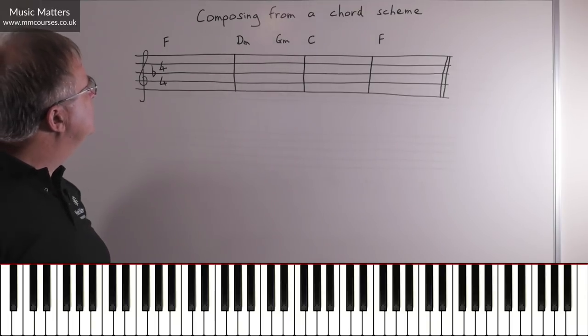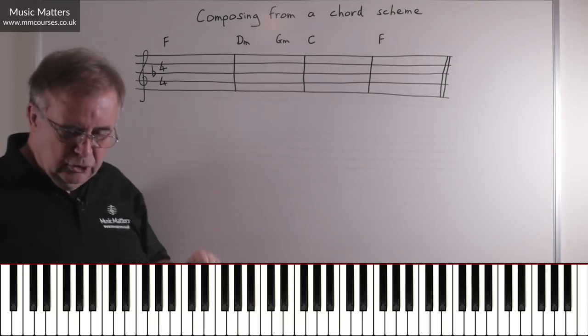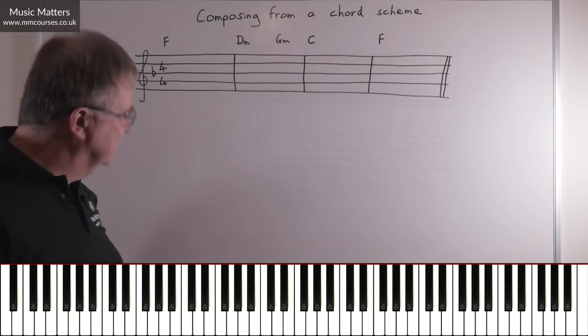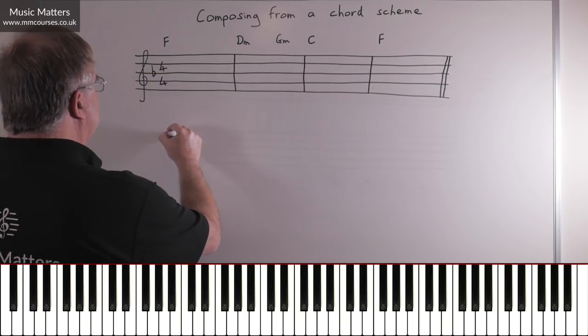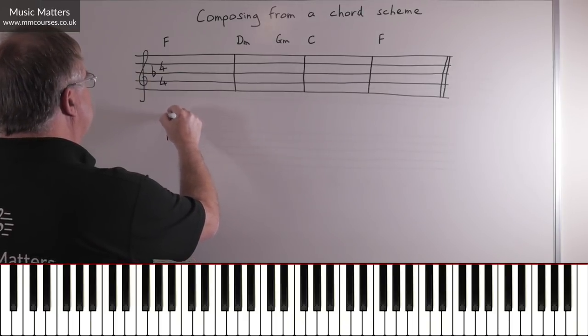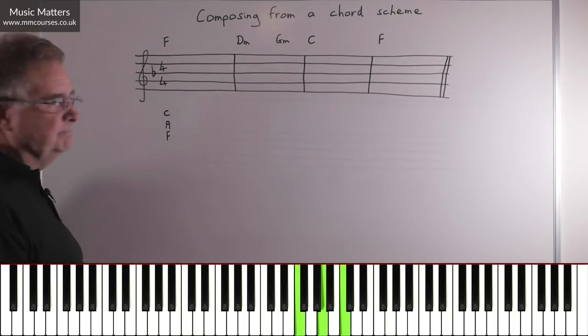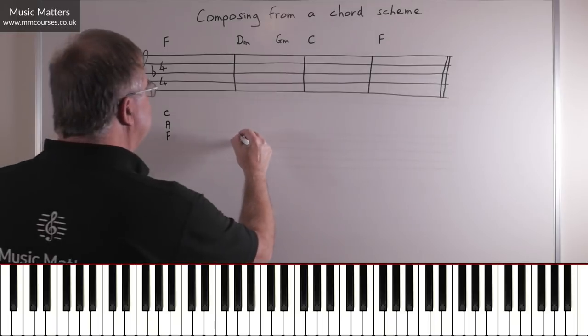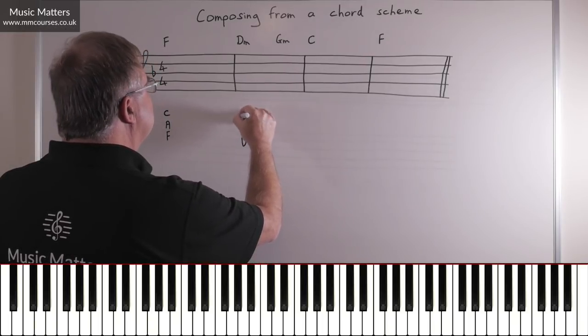Okay, so if I want to write a melody to fit with these chords, well, the first thing I need to do is to be really sure I know which notes are in the chords. So if I've got a chord of F, the notes are F, A, C. So there's F, A, C. In D minor, the notes are D, F, A.